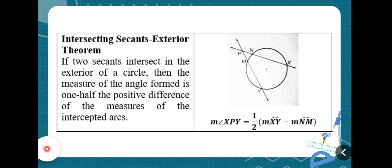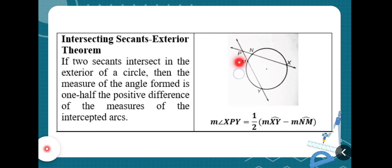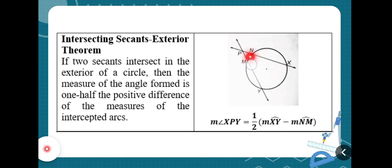Now let's look at the first theorem on angles formed by tangents and secants: the Intersecting Secants Exterior Theorem. This states that if two secants intersect in the exterior of the circle, then the measure of the angle formed is one half the positive difference of the measures of the intercepted arcs. To find angle XPY, you get half of the positive difference of the two arcs — the bigger arc XY minus the smaller arc NM, divided by two.